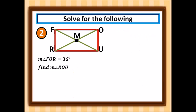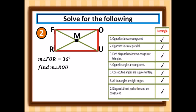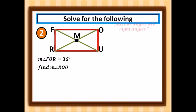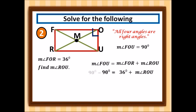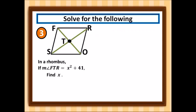For the second problem: the measure of angle FOR is 36 degrees; find the measure of angle ROU. We use property 6 — all four angles in a rectangle are right angles — so angle FOU = 90 degrees. Since angle FOU = angle FOR + angle ROU, we have 90 = 36 + angle ROU, so angle ROU = 90 − 36 = 54 degrees.